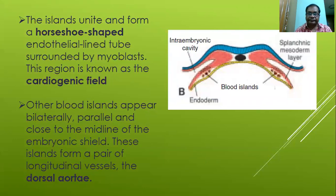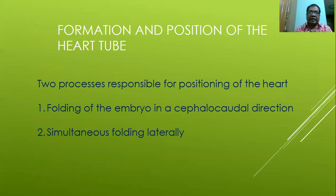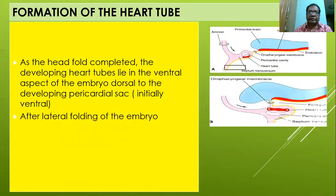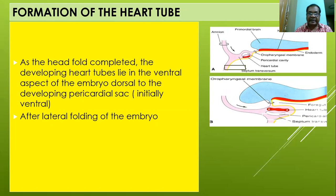Two processes are responsible for the positioning of the heart: number one is folding of the embryo in a cephalocaudal direction, and simultaneous folding laterally. As the head fold is completed, the developing heart tube lies in the ventral aspect of the embryo, dorsal to the developing pericardial sac — so initially it remains ventral to the pericardial sac.